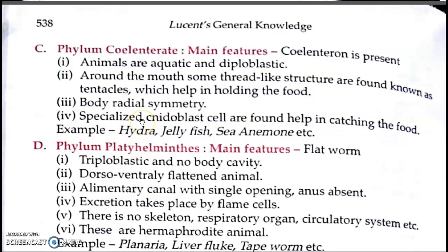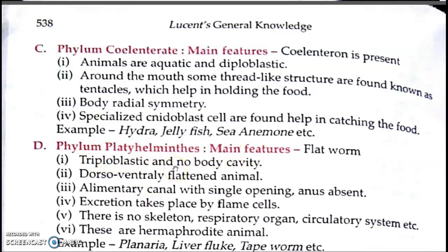There are specialized cells called nematoblast cells which help in catching food. The body is radially symmetrical, meaning when you cut the animal through its central axis at any angle, you get identical halves. So to summarize Coelenterata: hollow body cavity, aquatic, diploblastic, tentacles around the mouth, nematoblast cells, and radially symmetrical body. We will continue with phylum Platyhelminthes in the next video. Thank you very much.